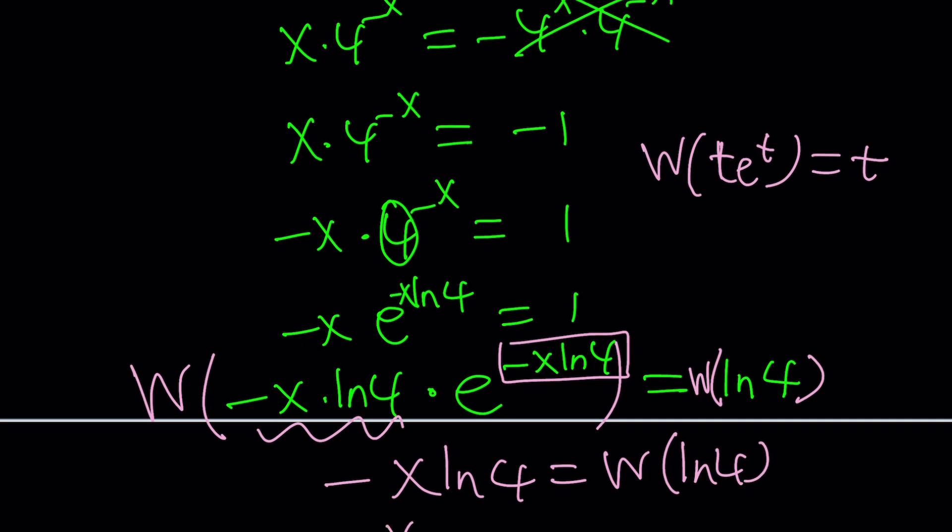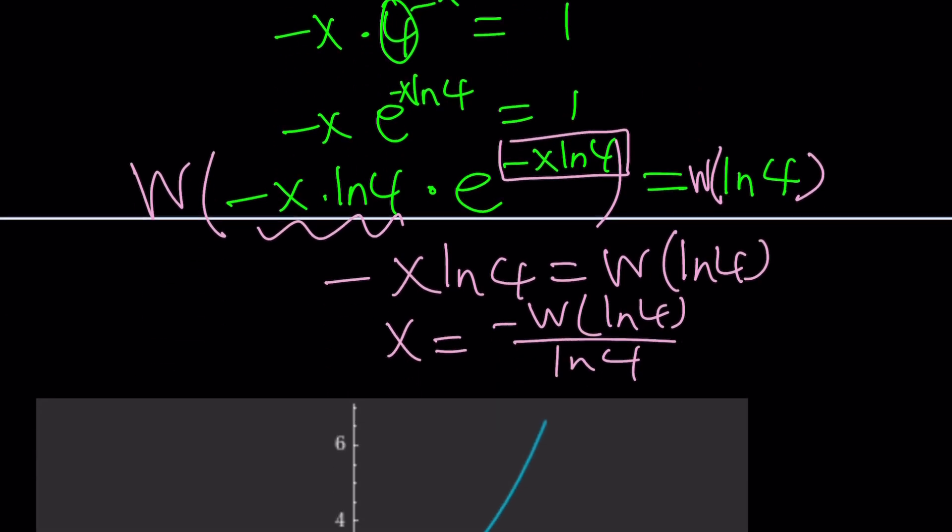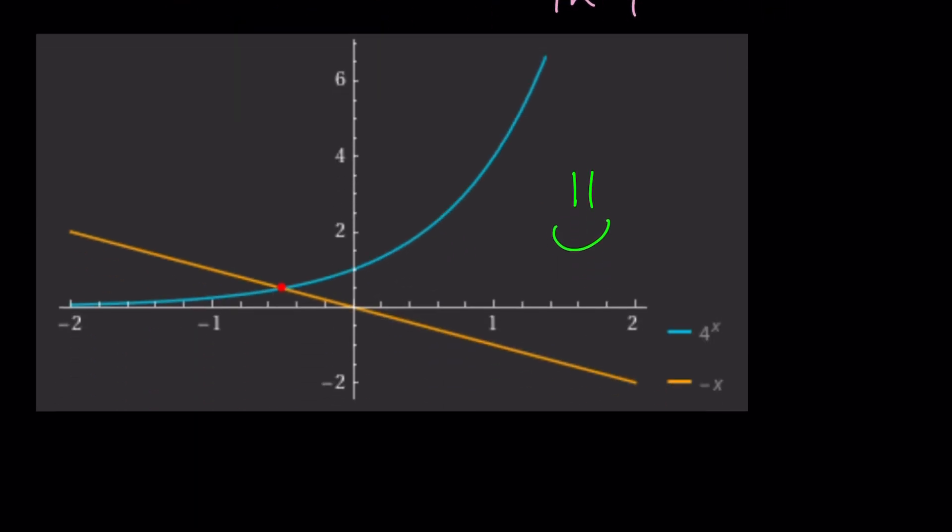So, from here, you get negative x ln 4 equals w of ln 4. So, from here, x would be negative w ln 4 divided by ln 4. And yes, if you work it out, you'll end up with a real value, as well as considering the different branches of the Lambert's w function, you should be able to get complex, non-real solutions. And this brings us to the end of this video.